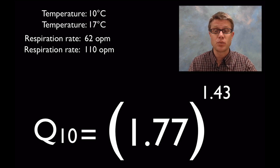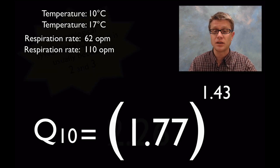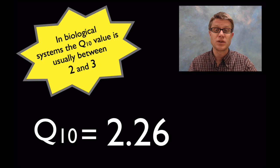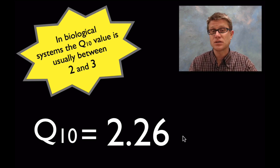And so let's simplify a little bit. I get 1.77 raised to the 1.43. I plug that in my calculator and I get 2.26. So that would be my Q10 value. It's not going to have any units. It's simply a ratio.